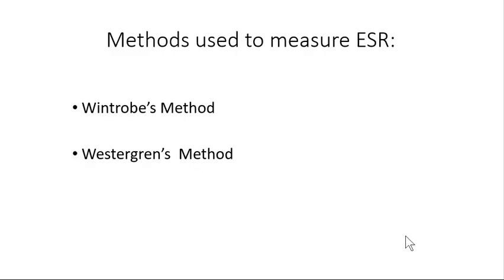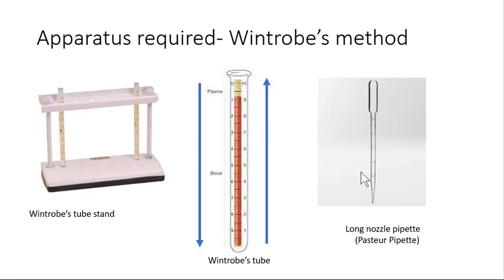There are two methods used to measure ESR: the Wintrobe method and the Westergren method. Whenever ESR is performed, it is always noted which method was used, because the values differ between the two methods.